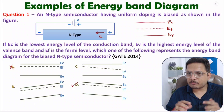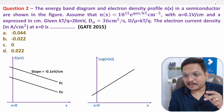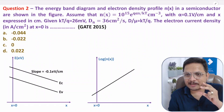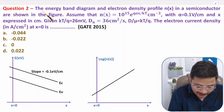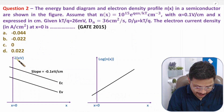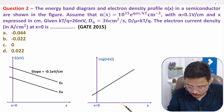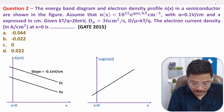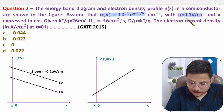Now let us move to the second interesting question, which is quite tricky. The energy band diagram and electron density profile n(x) in a semiconductor are shown in the figure — energy versus x, and log n(x) versus x. We are given that n(x) equals a certain expression with alpha equal to 0.1 V/cm, where alpha is defined, and x is expressed in centimeters.